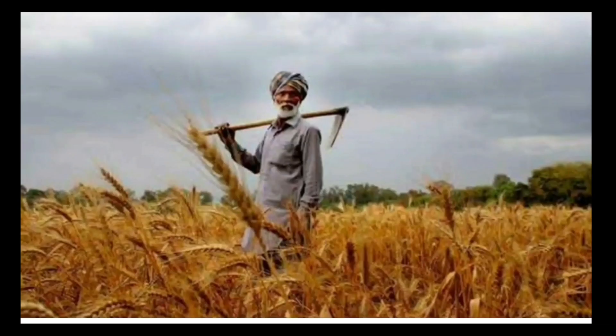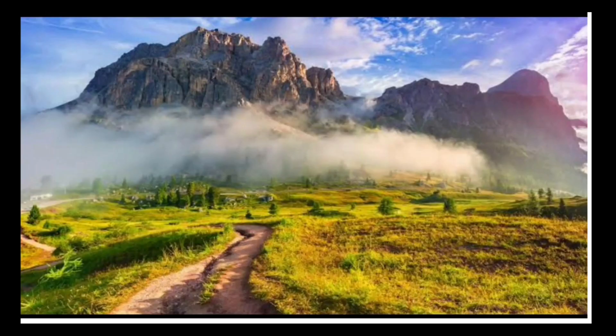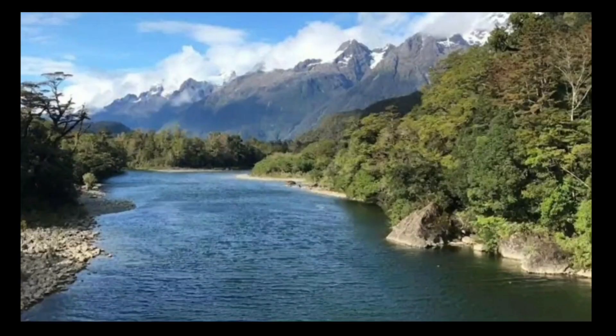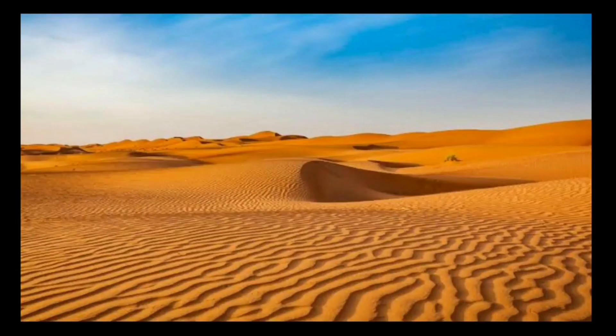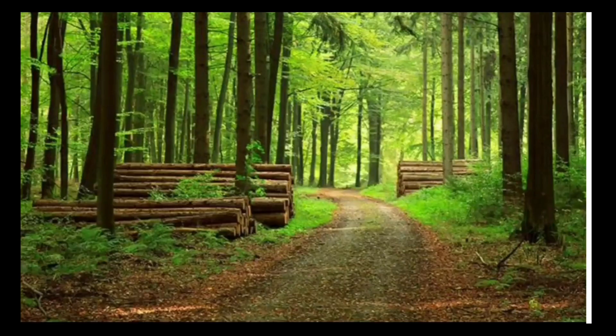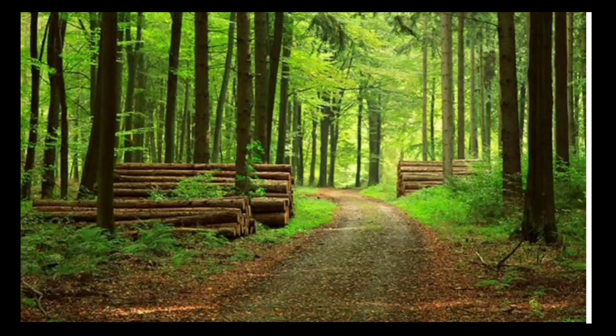Dadaji told that it is not possible to do farming everywhere in our country because somewhere there are hills, somewhere rivers and streams, somewhere deserts, and somewhere there are forests. Various crops are grown in different states according to the type of soil and climate.